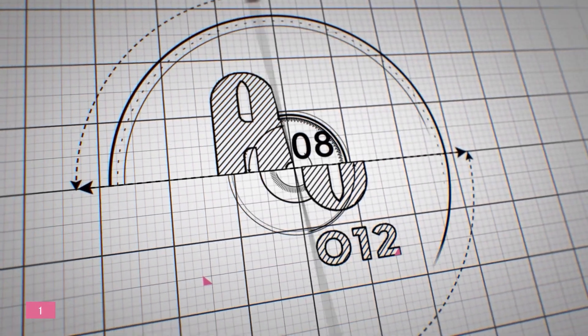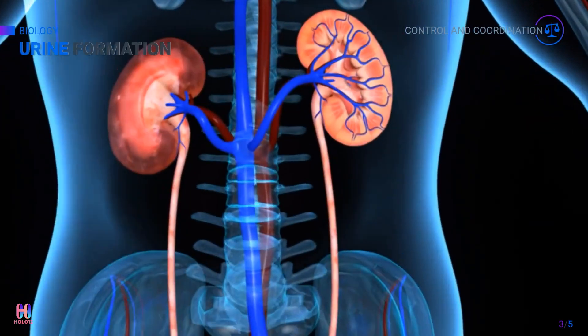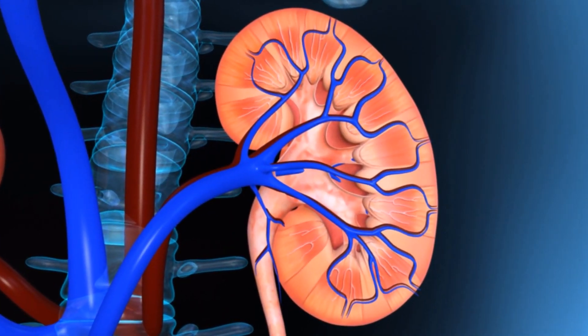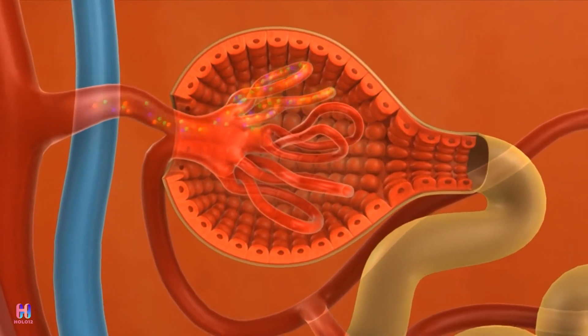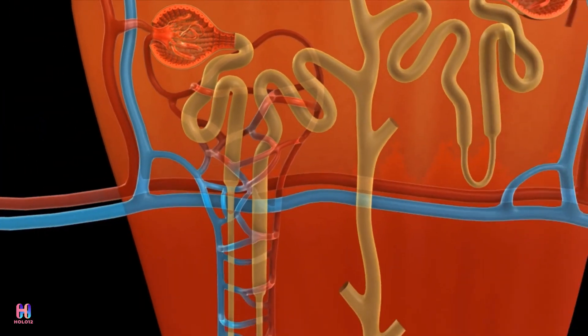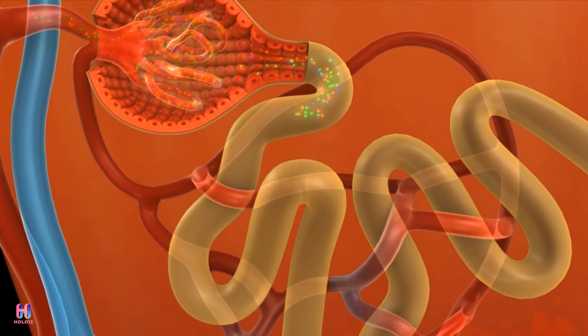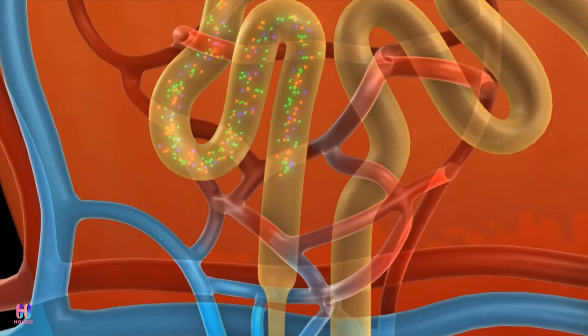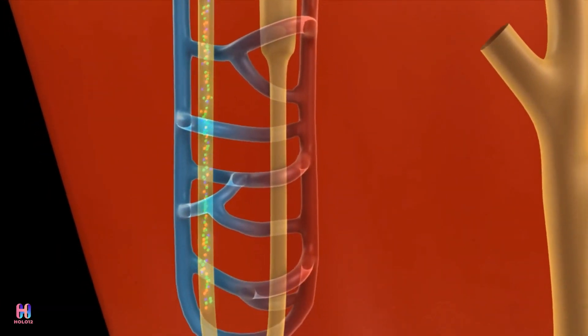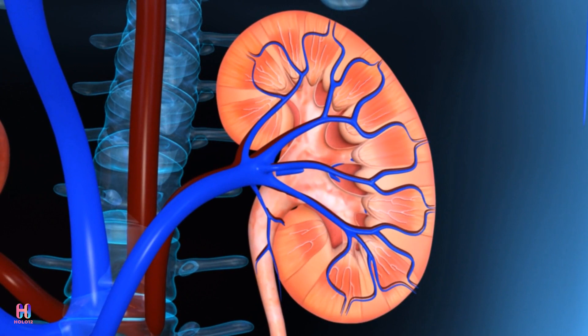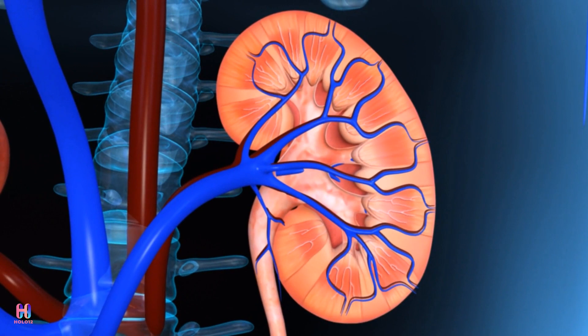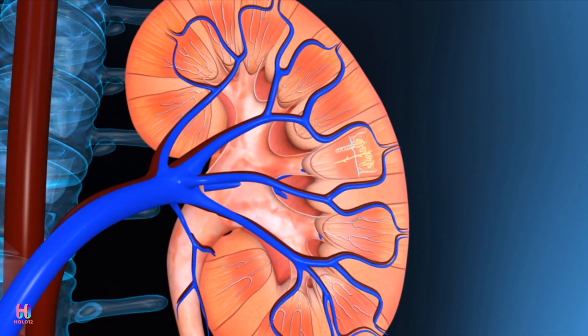Now we know that the kidneys filter the blood — all the impurities and toxic substances are excreted in the urine. Blood is filtered through the kidneys using a process called ultrafiltration. Each kidney has numerous filtering units known as nephrons. Within these nephrons, structures called glomeruli and a tubule are present. Glomeruli are a group of tiny blood vessels that are extremely narrow.